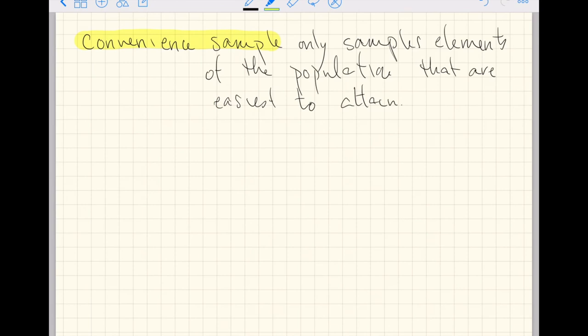Our goal in statistics is to make statements about the population using a simple random sample that avoids any kind of bias in our sample. A really easy one to remember that introduces bias is a convenience sample.